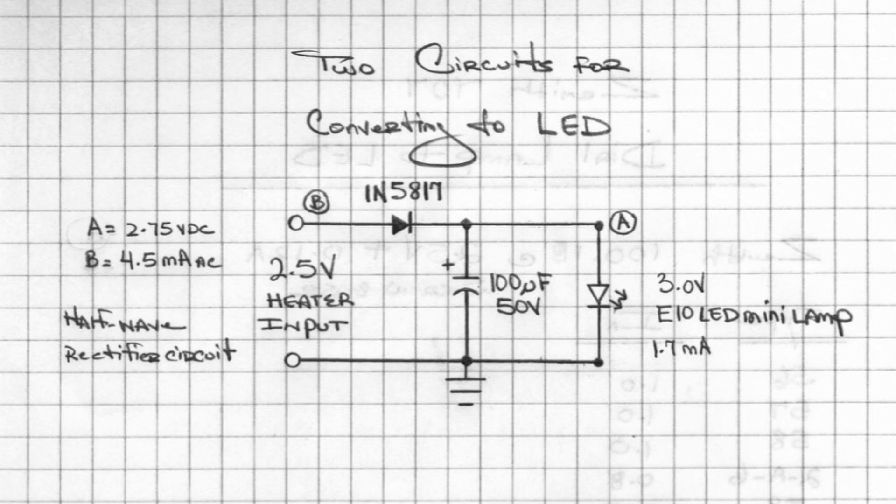This is how I wired it in. I removed the direct connection to the heater string and added the diode and capacitor as indicated on the schematic—no dropping resistor, of course, due to the low voltage. Current measured at 1.7 milliamps in my case.